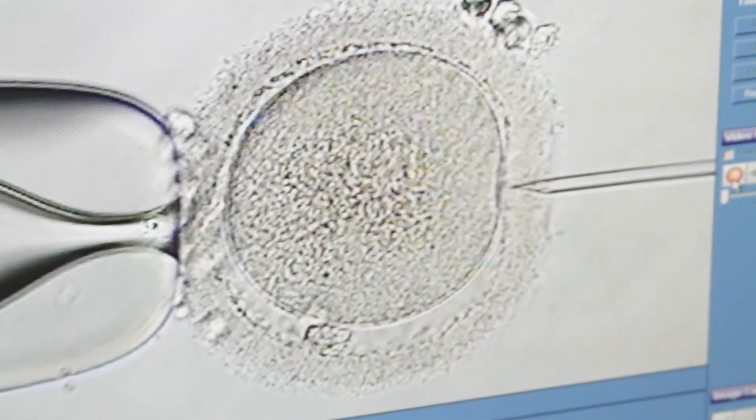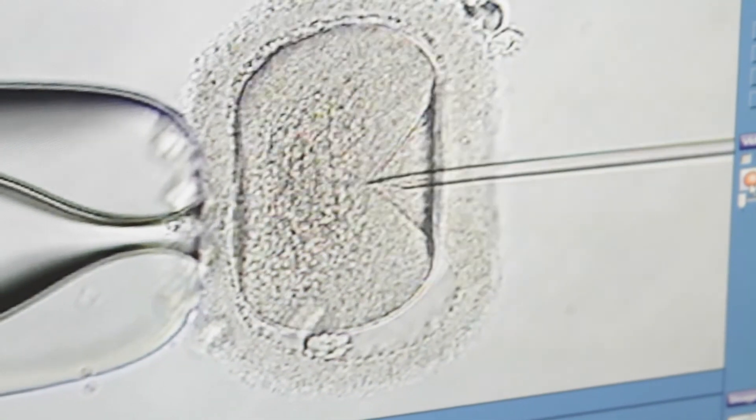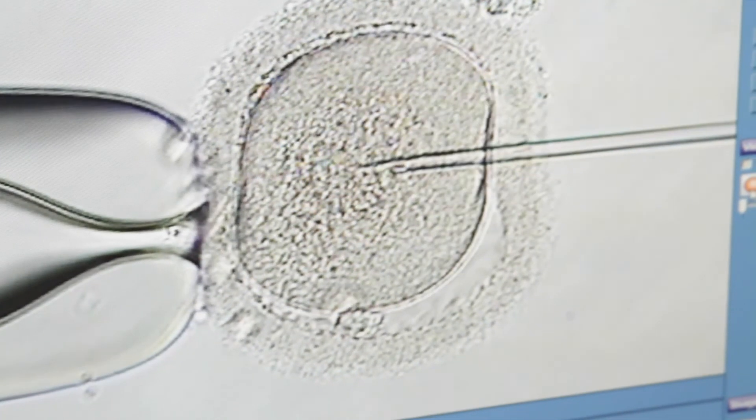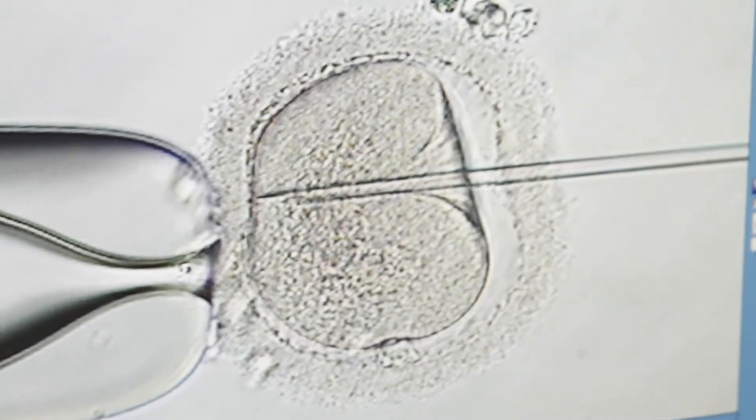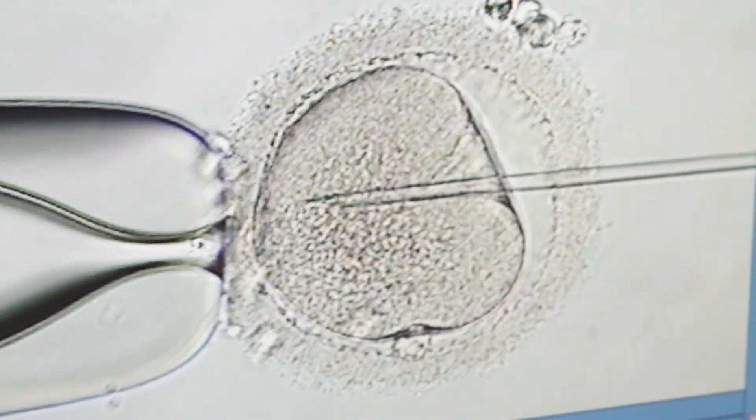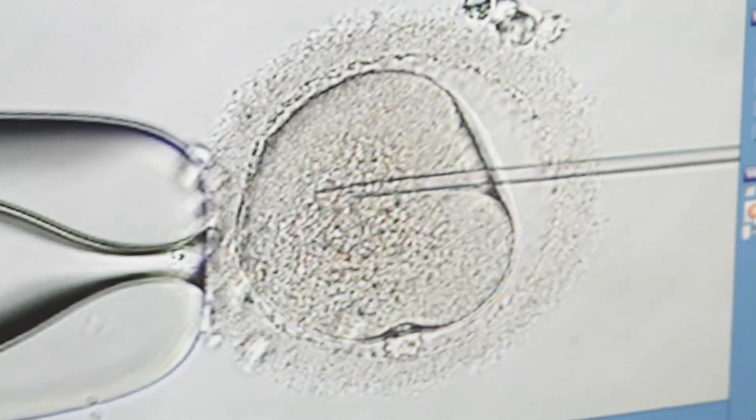You can see with this shot how that micropipette is only just slightly larger than the sperm itself. It's approximately the same diameter as a single human hair, so it really is very tiny.